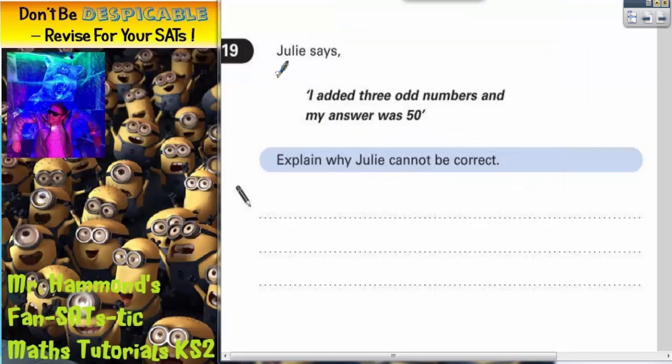Question 19: Julie says, 'I added three odd numbers and my answer was 50.' Explain why Julie cannot be correct. Well, the trick with this one is to understand what happens if you add odd and even numbers together.